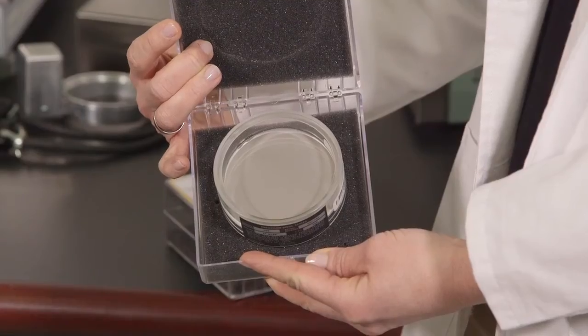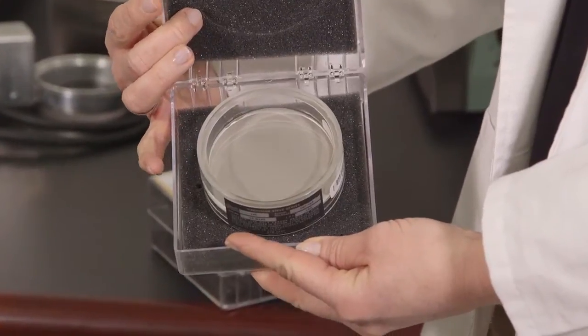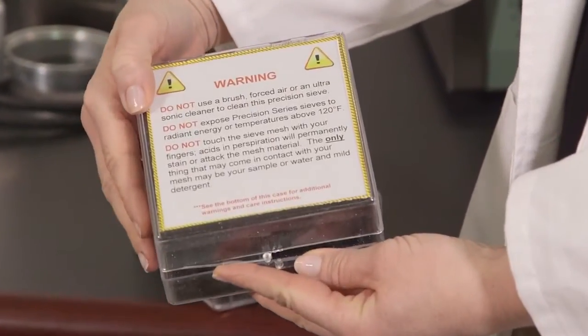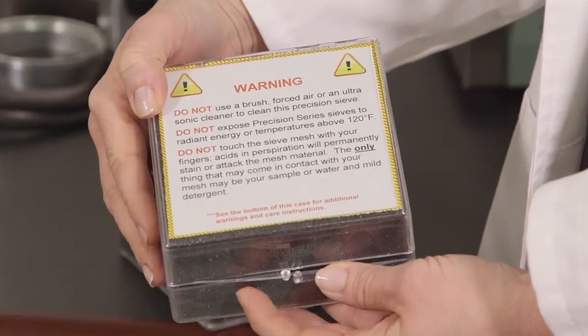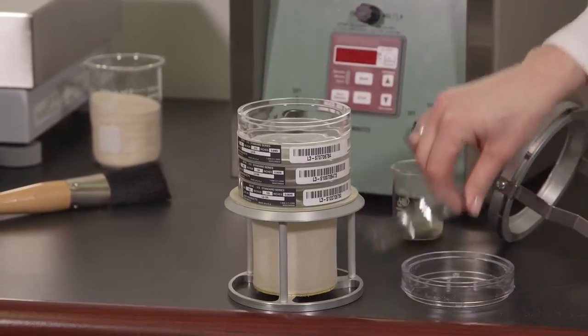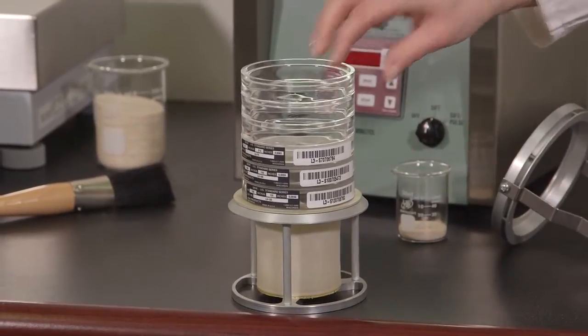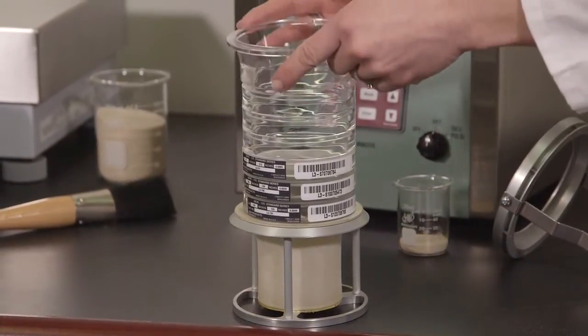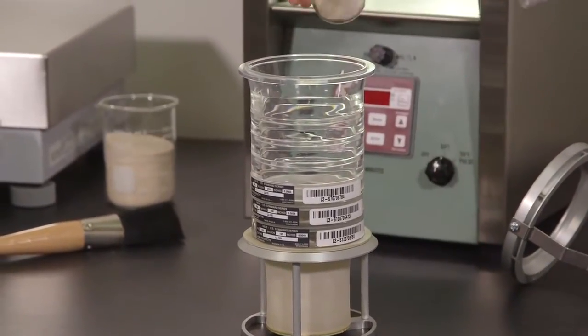When using electroformed precision sieves, be certain to refer to the care and handling guidelines on the sieve case. If fewer sieves are used, add spacers at the top to fill out the stack to the required height. Add the top cone and introduce your sample.